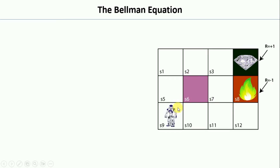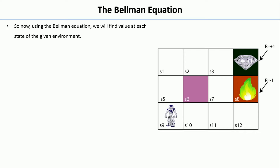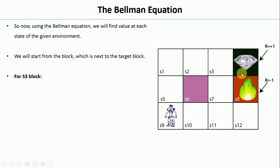This is the grid I am going to consider for this example. The grid consists of 3 rows and 4 columns. The agent is present in S9, S6 is a block, S8 is a danger or fire — whenever the agent goes there, it will be given a reward of minus 1. S4 is the goal, and whenever the agent reaches it, it will be given a reward of plus 1. We start from S3, which is next to the goal state — performing a right action moves to the goal, so it receives a reward of plus 1.